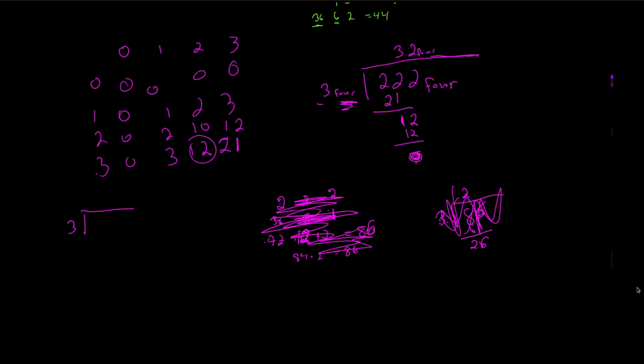Let's verify. The dividend two-two-two in base four is two plus eight plus thirty-two, which is forty-two. Three in base four is just three, and forty-two divided by three is fourteen. Our answer three-two in base four is two in the ones and three in the fours, so twelve plus two equals fourteen. It checks out. Our positional systems allow us to do mathematics in different bases, which allows us to use different machines to calculate as needed. Computers need base two, and we'll look at tricks we can use with base two.